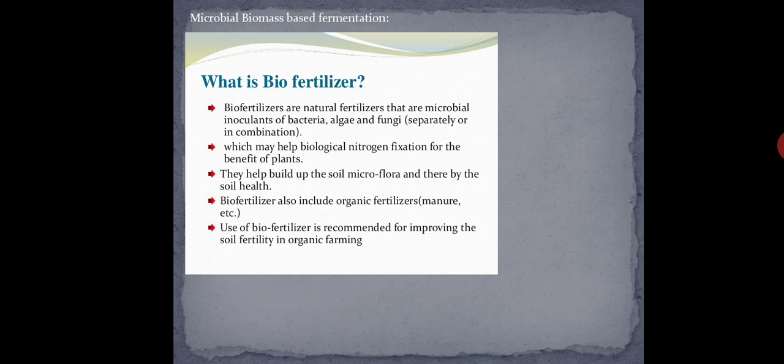Now we start with our actual point — biofertilizer. With the use of microbial biomass, we make biofertilizer. Let's understand: we split the word — 'bio' means living microbe, and 'fertilizer' is fertilizer. So biofertilizer is fertilizer made up of biological organisms. This is a natural fertilizer because it is made from microbes with no chemicals — it may be made up of bacteria, algae, or fungi.